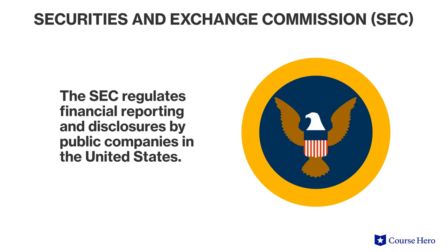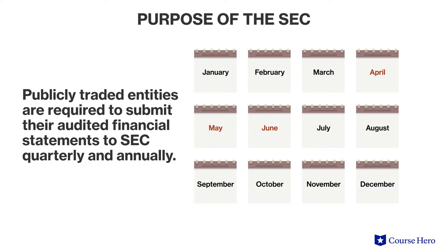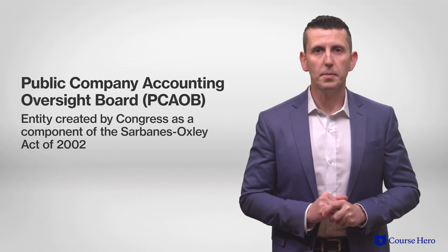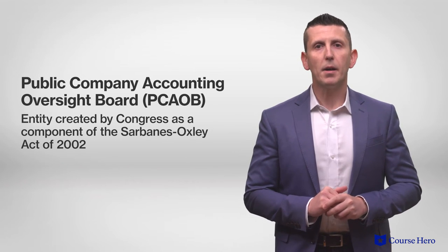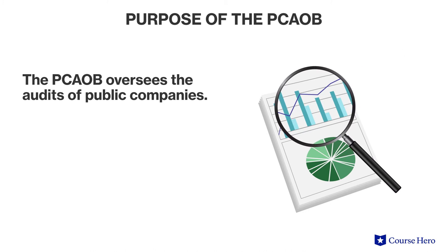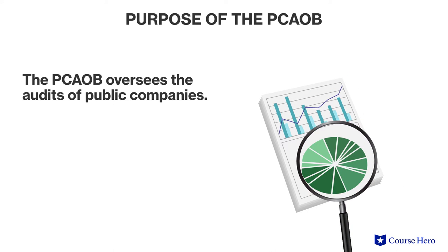While FASB develops standards, the Securities and Exchange Commission, SEC, actually regulates financial reporting and disclosures by public companies in the United States. All publicly traded entities are required to submit their audited financial statements to the SEC quarterly and annually. The SEC also monitors the Public Company Accounting Oversight Board, PCAOB, which is an entity created by Congress as a component of the Sarbanes-Oxley Act of 2002. The PCAOB oversees the audits of public companies to protect the interests of investors.